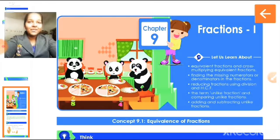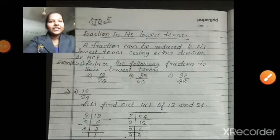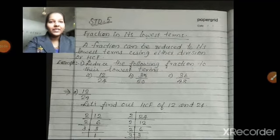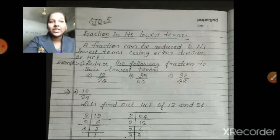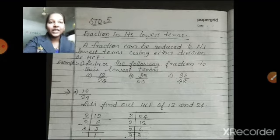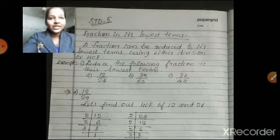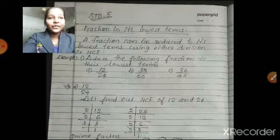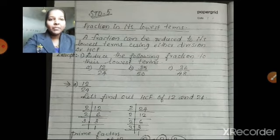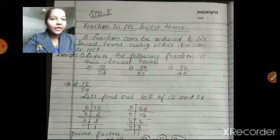I will explain this using some examples. We learned that a fraction can be reduced to its lowest term using either division or HCF. Now we are discussing how to use the HCF to reduce a fraction. The example question is: reduce the following fractions to their lowest terms. Part A: 12 by 24. Part B: 35 by 50. Part C: 36 by 48.